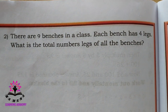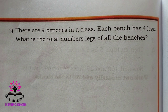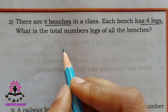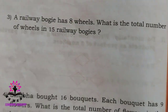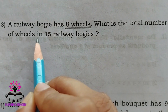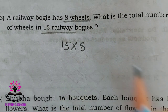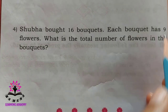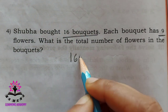There are 9 benches in a class and each bench has 4 legs. What is the total number of legs? So 9 into 4 — direct multiplication. A railway bogey has 8 wheels. What is the total number of wheels in 15 railway bogeys? 15 into 8. Shubha bought 16 bouquets and each bouquet has 9 flowers. What is the total number of flowers? 16 into 9.